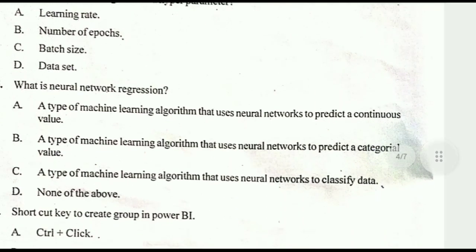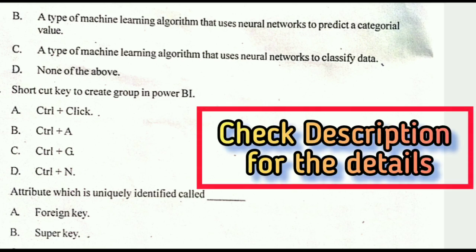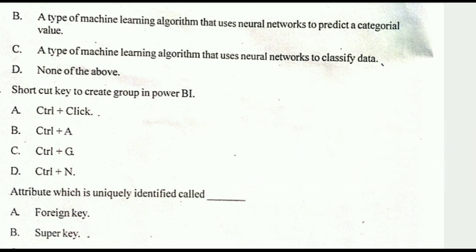Fifteenth question: what is neural network regression? The correct answer is option A — a type of machine learning algorithm that uses neural networks to predict a continuous value is the correct answer.